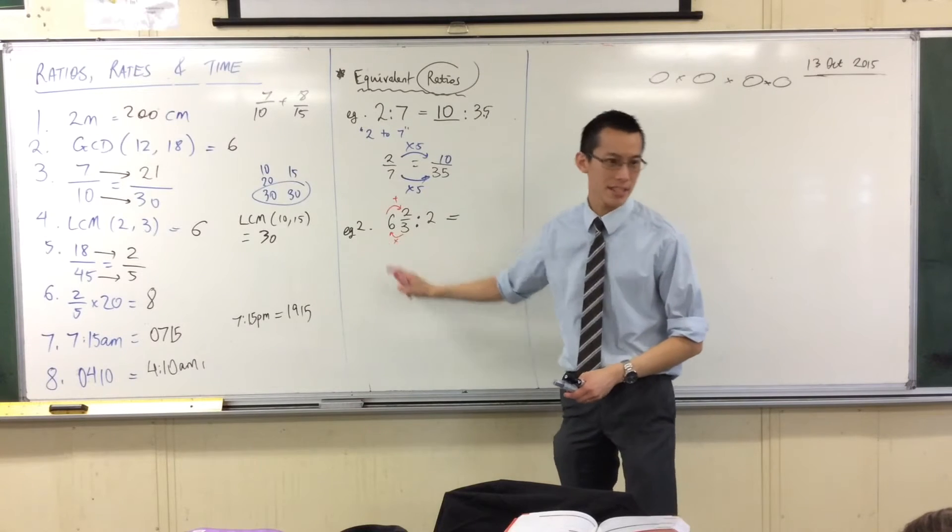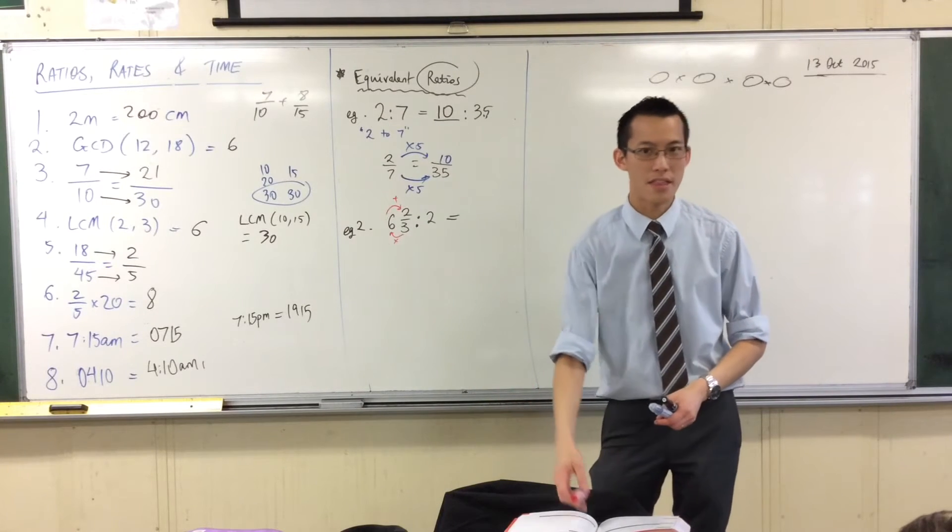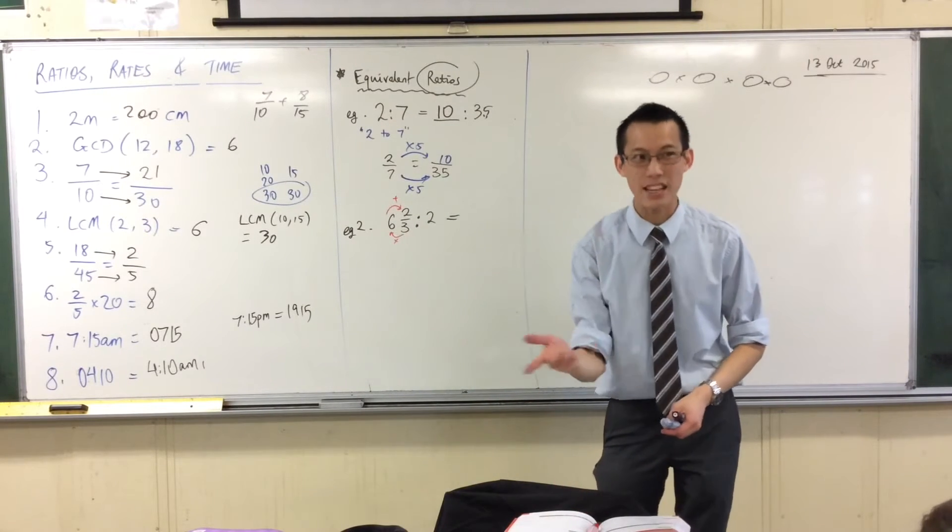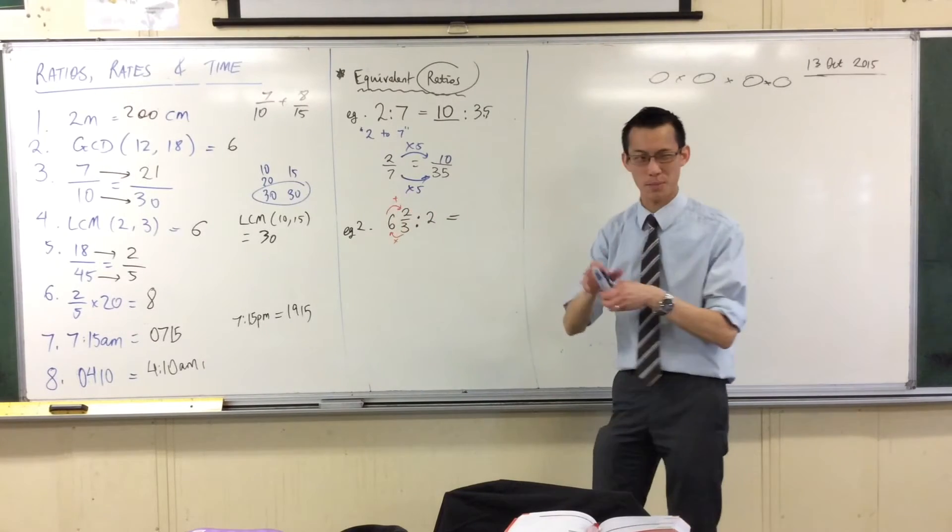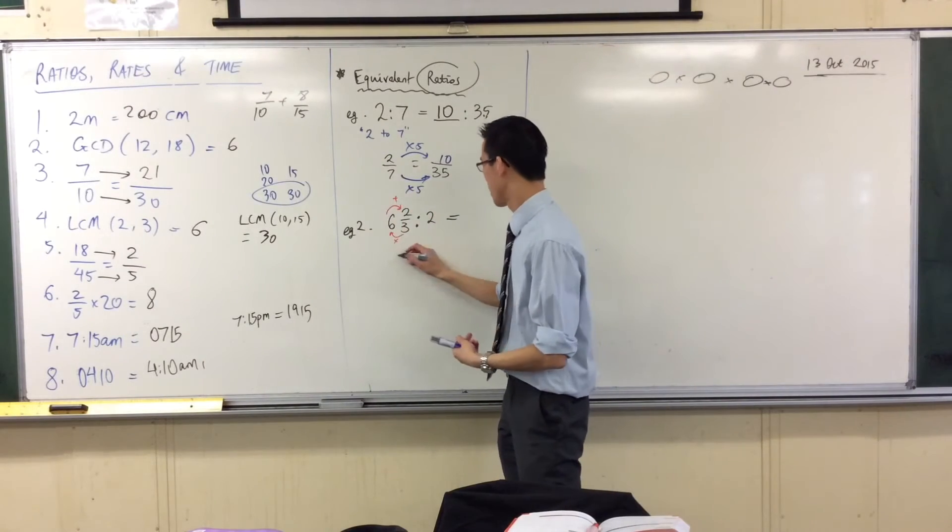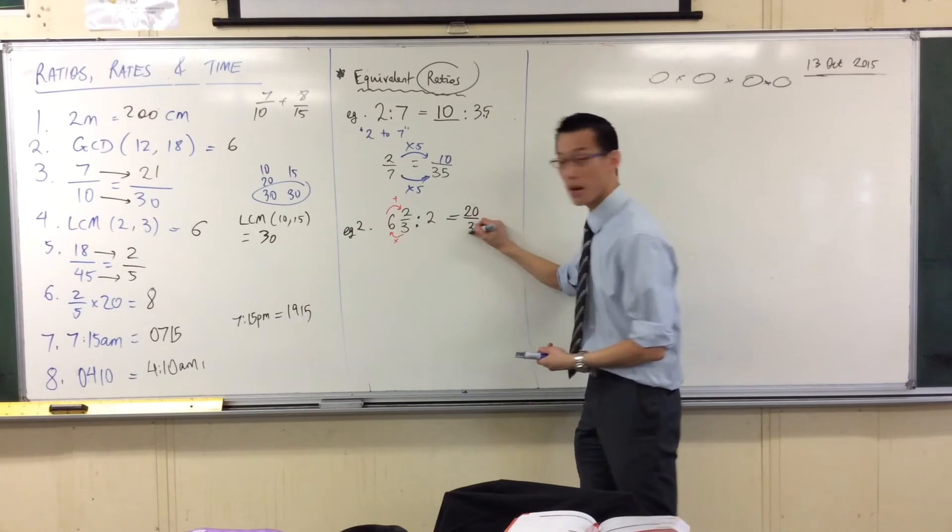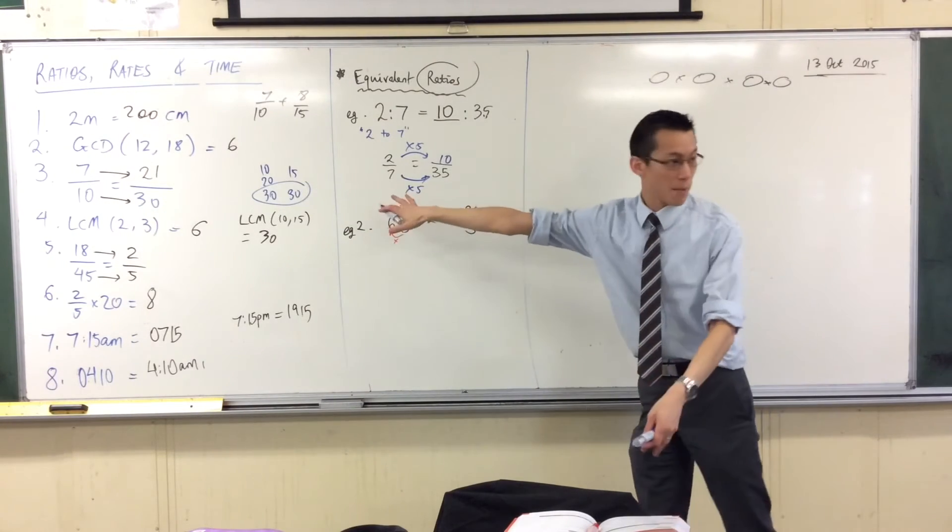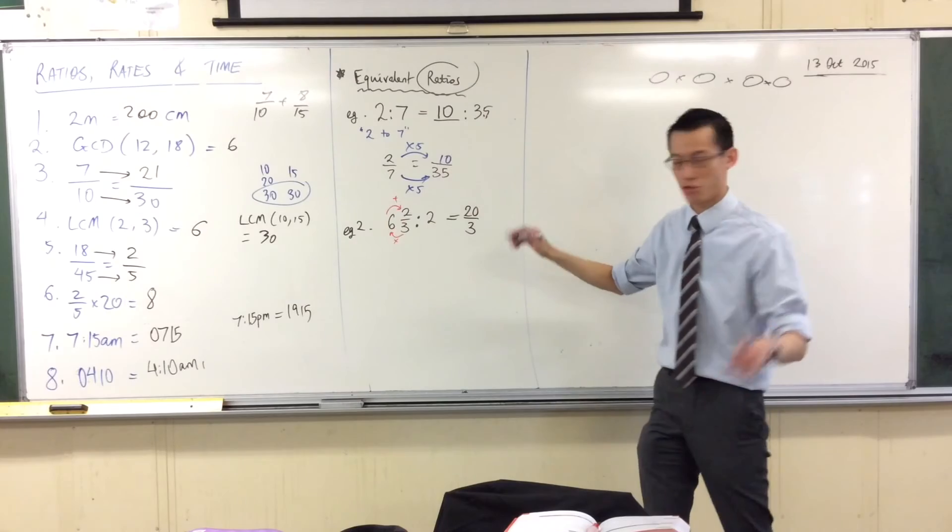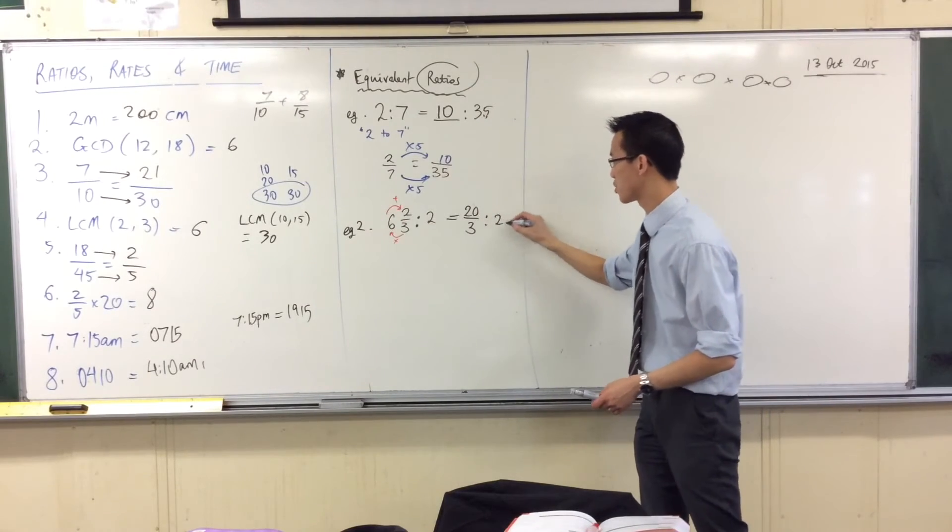How many thirds are in 6? How many thirds? There are 18 thirds. Okay so 18 thirds plus 2 that gives me 20 in total. 20 thirds. Right? That number on the left hasn't changed. I've just dressed it up a little differently. So the 2 is still over there.